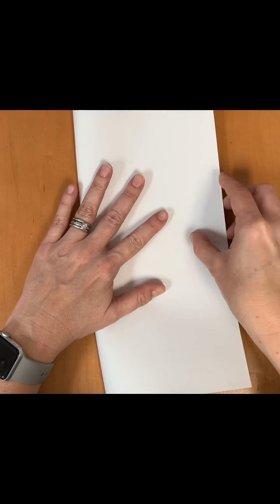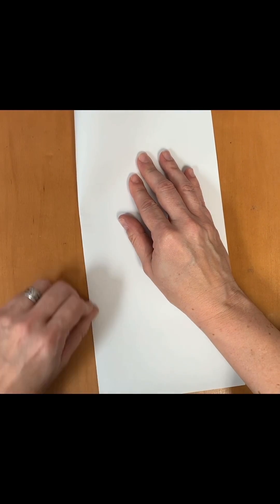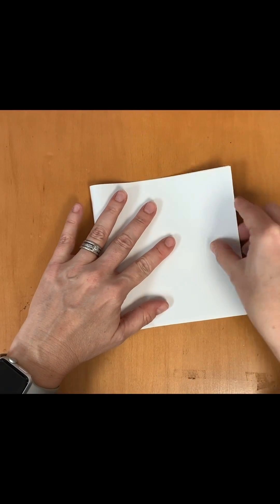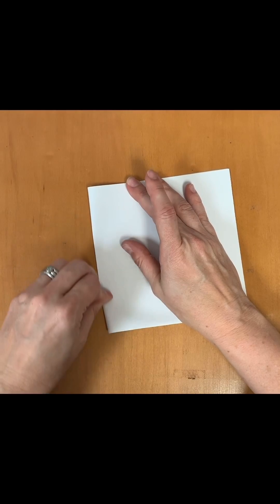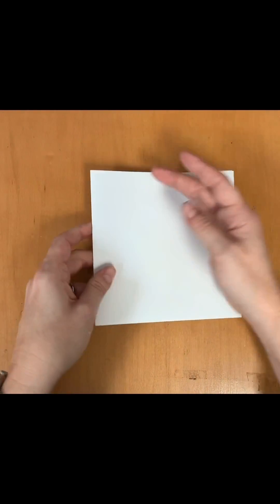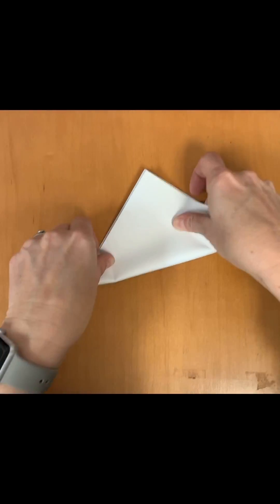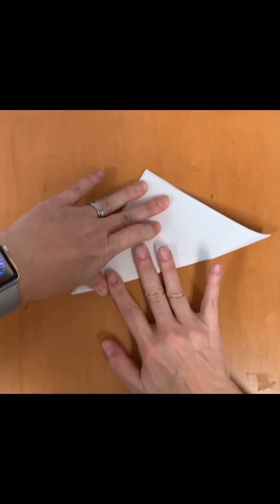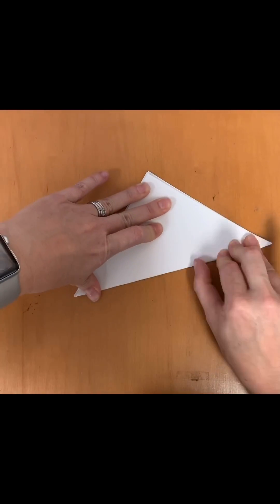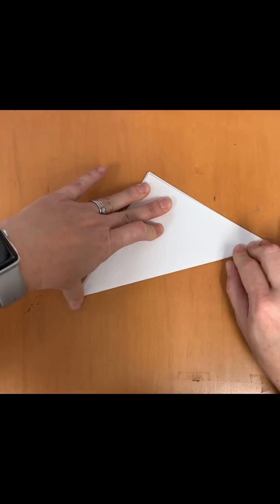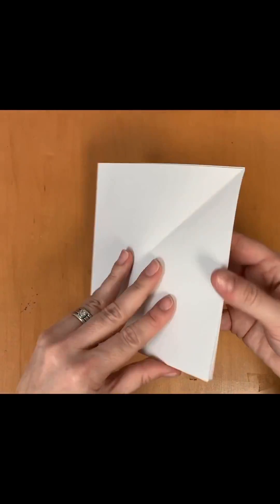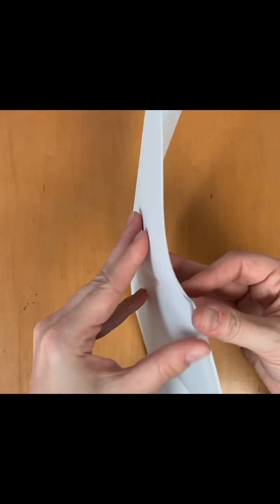Fold your paper in half. Hamburger fold your paper. Have your teacher taco fold or diagonally fold your paper. This one's tricky. Open and smooth your paper out super flat.